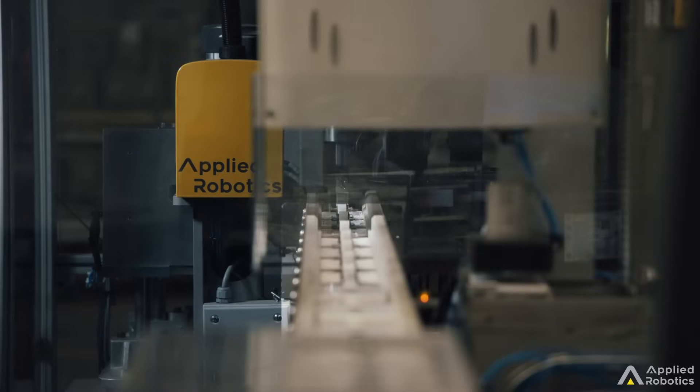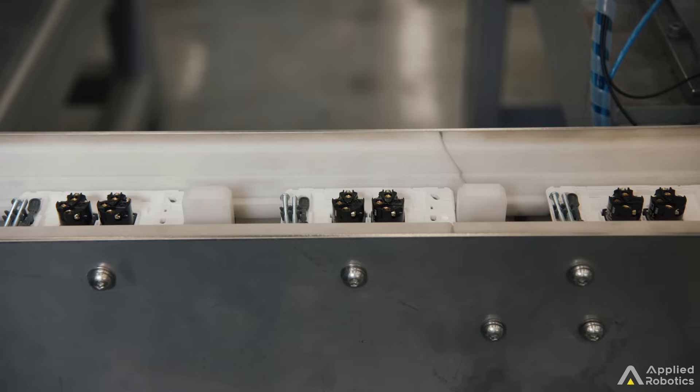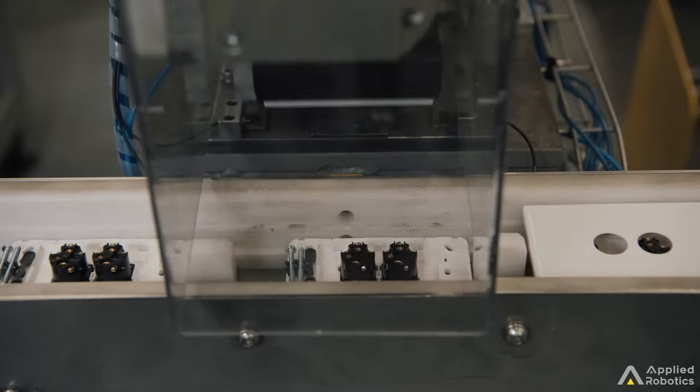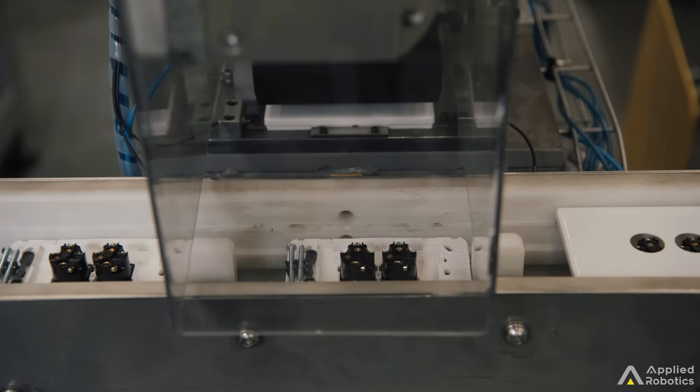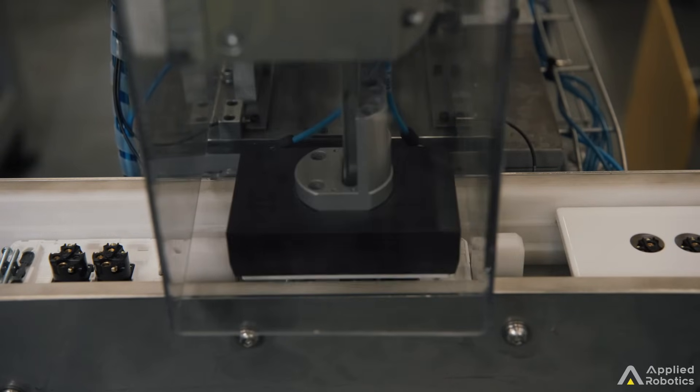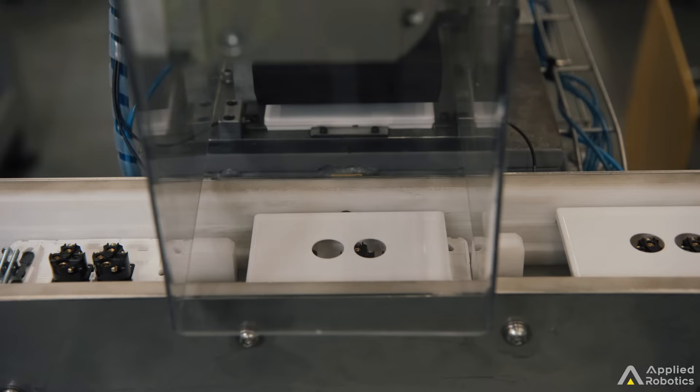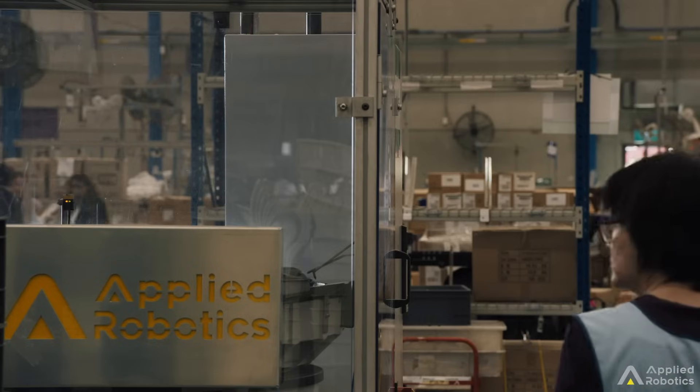This particular machine is using the same operators as the manual machine was using originally, but it's got much higher output. So we've pretty much tripled the output of this particular line, and the operator who was there originally assembling these plates for your light switches by hand with a press is now on the line feeding bowl feeders, watching the line run and operating the robot.